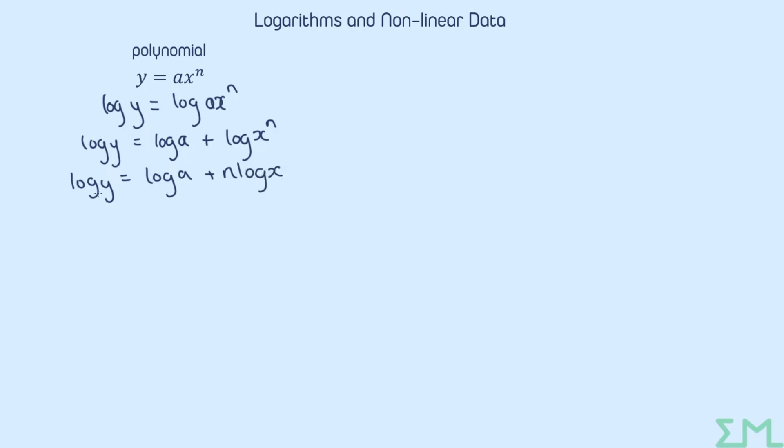It may not be immediately familiar to you as being a straight line graph, but what we can do here is effectively a transformation. We can call log y capital Y, and we can call log x capital X. To make this familiar to you, the number in front of log x, which is n here, I'm going to call that m, so that we get the mx part of the straight line graph. And the log a is just a constant, so I'm going to call that c. So what we've really got here is Y equals mX plus c.